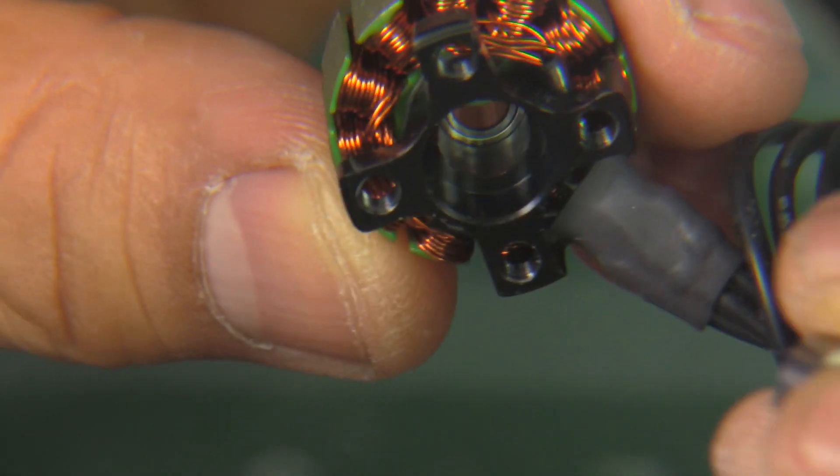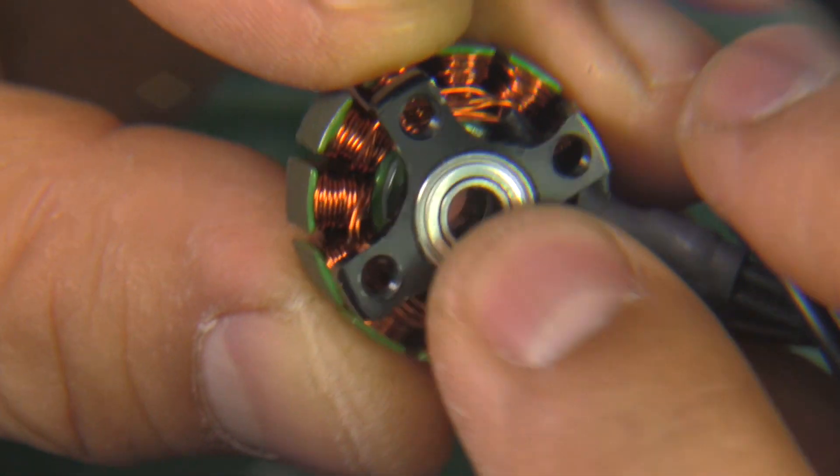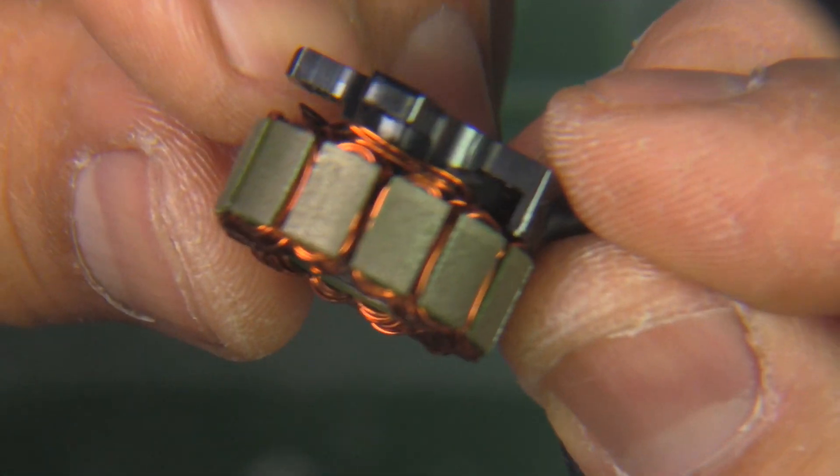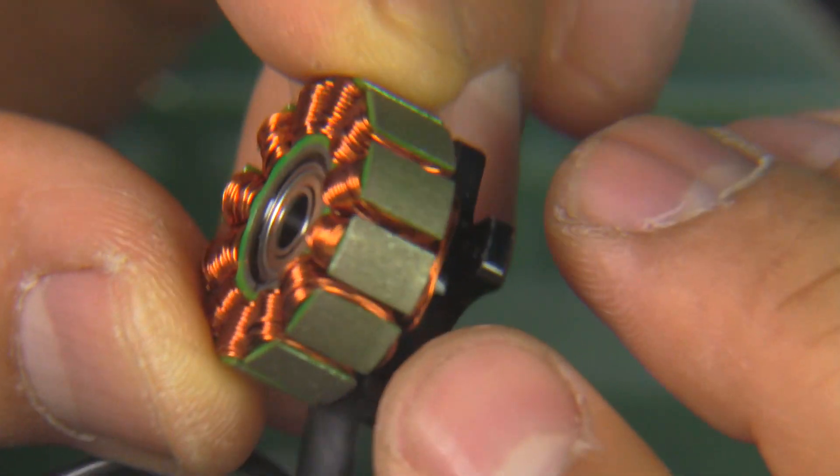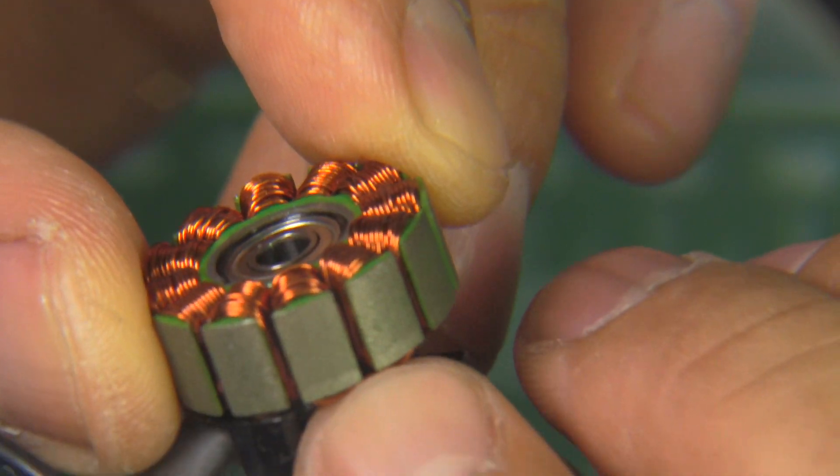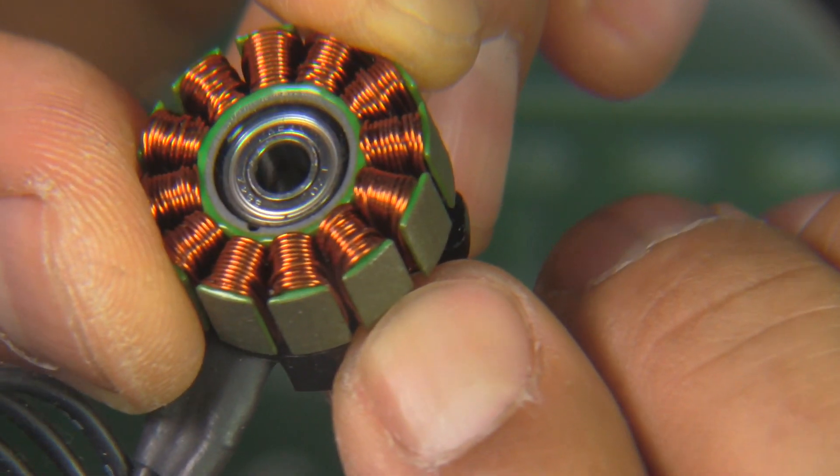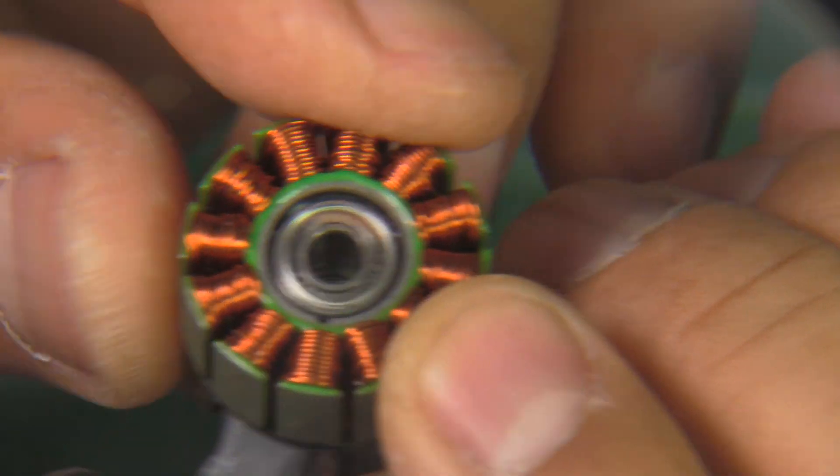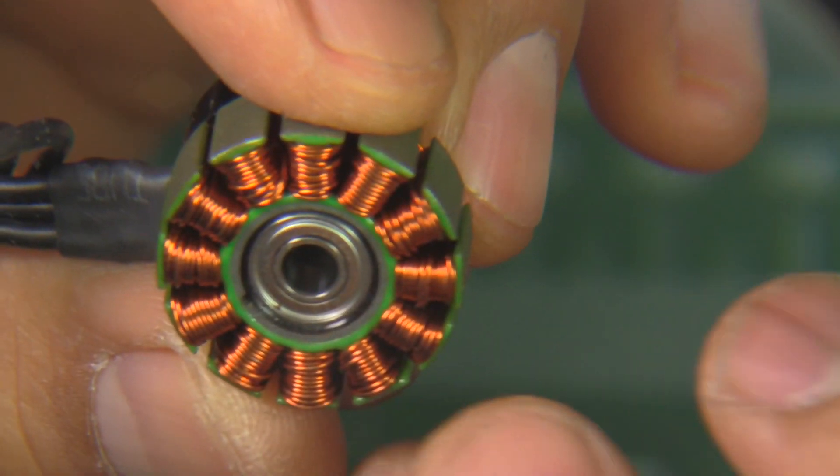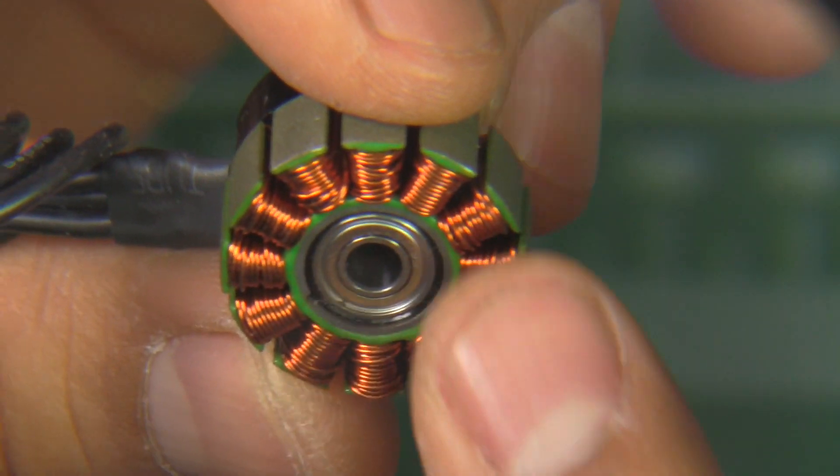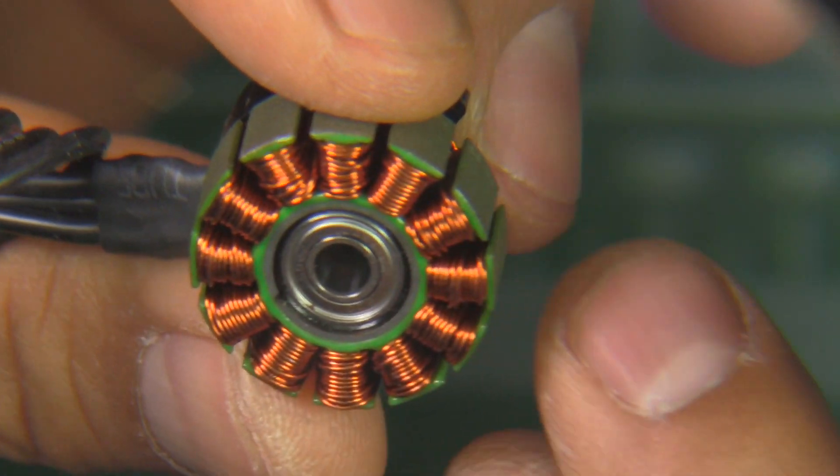Okay, so here's the stator and the bearing. Goes in pretty easily. And it looks like they're using, I want to say these are 0.15 millimeter, the laminations. They're pretty thin. As you can see, the windings are pretty neat. Pretty nicely done.